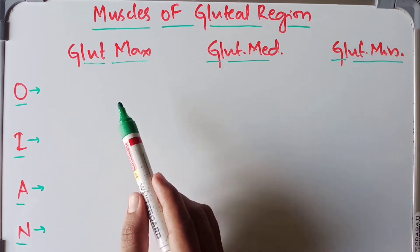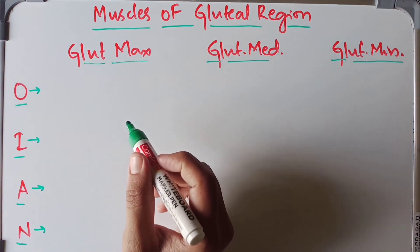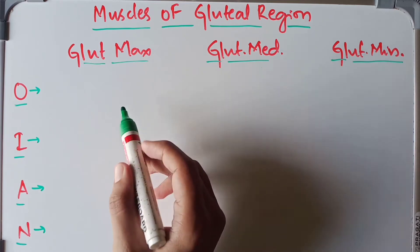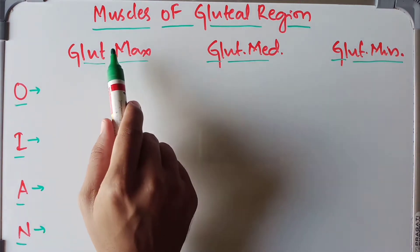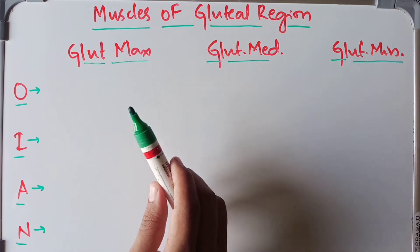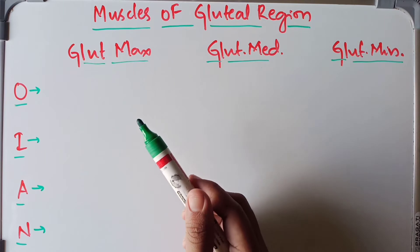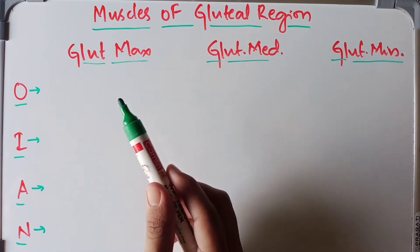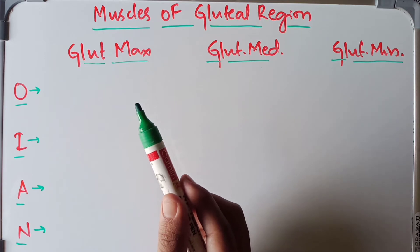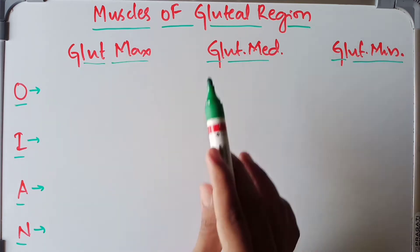The muscles of the gluteal region are divided into two groups: major muscles and minor muscles. The major muscles include the gluteus maximus, gluteus medius, gluteus minimus, and tensor fascia latae. The minor muscles are six in number: piriformis, superior gemella, inferior gemella, obturator internus, quadratus femoris, and obturator externus.